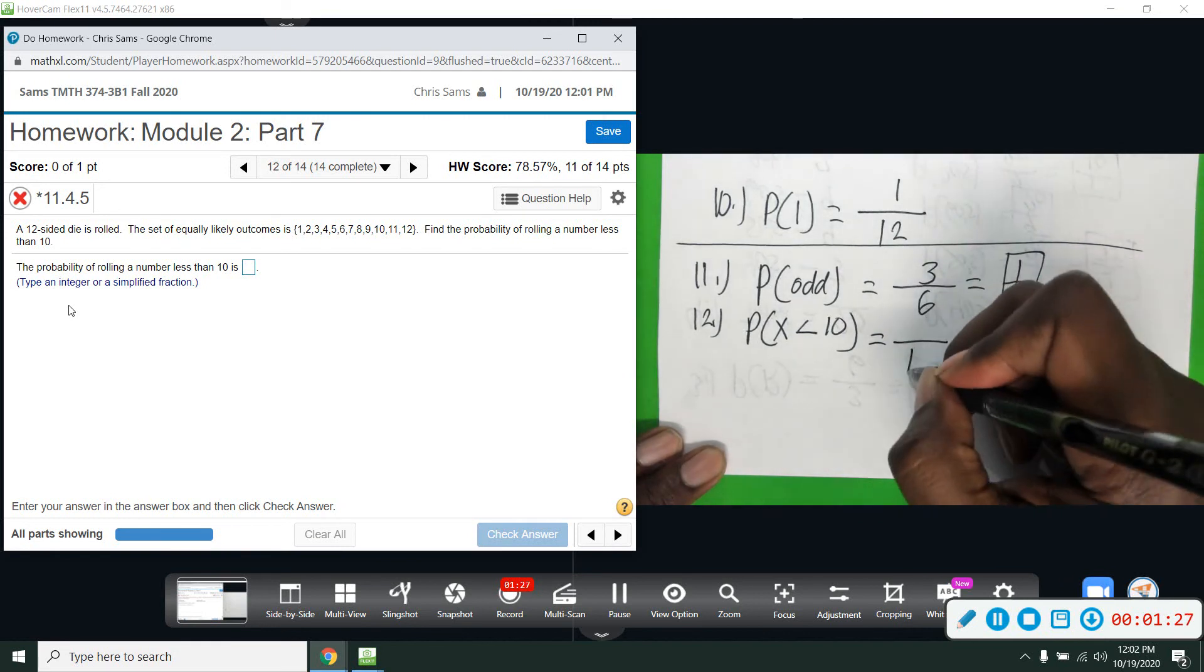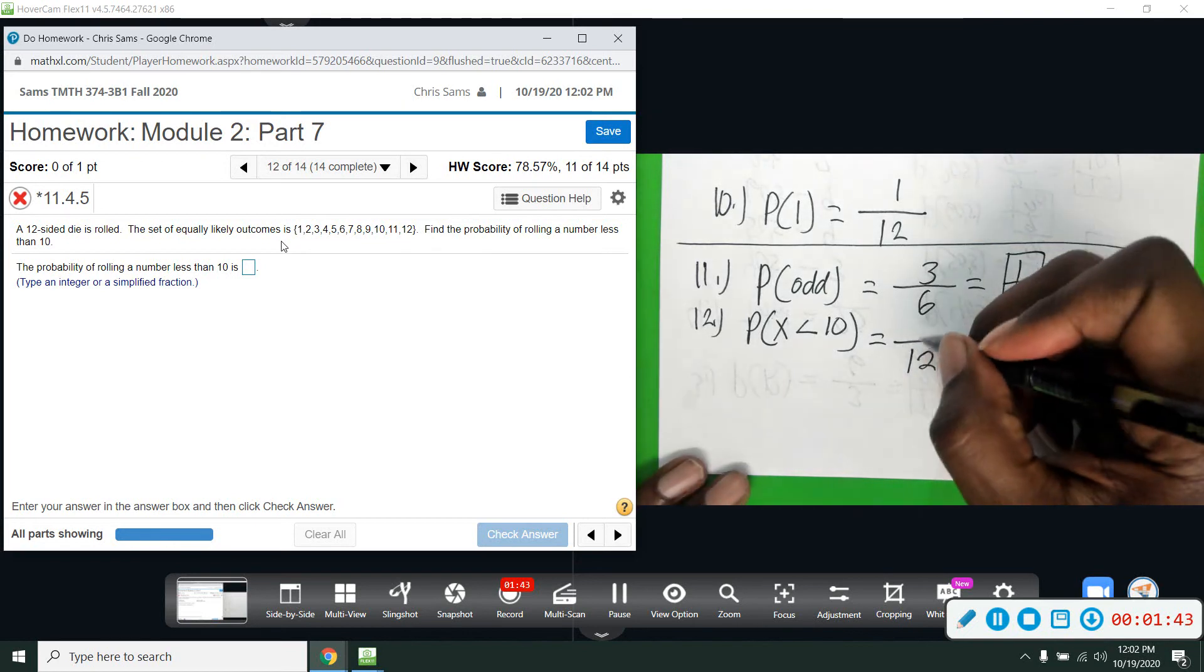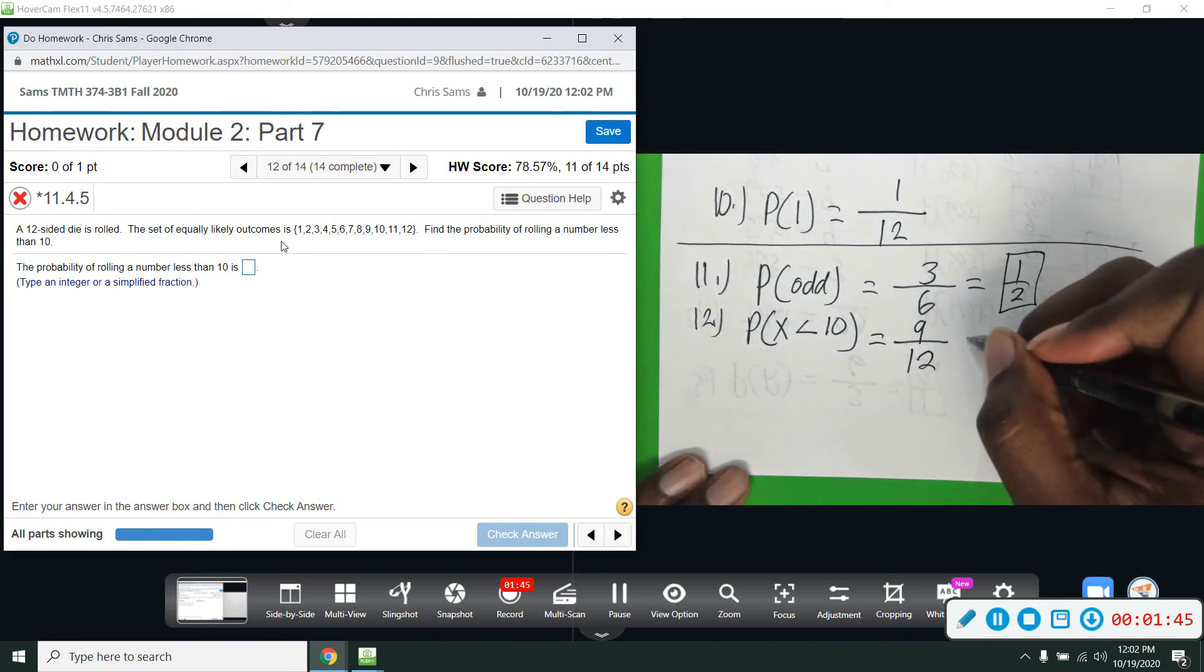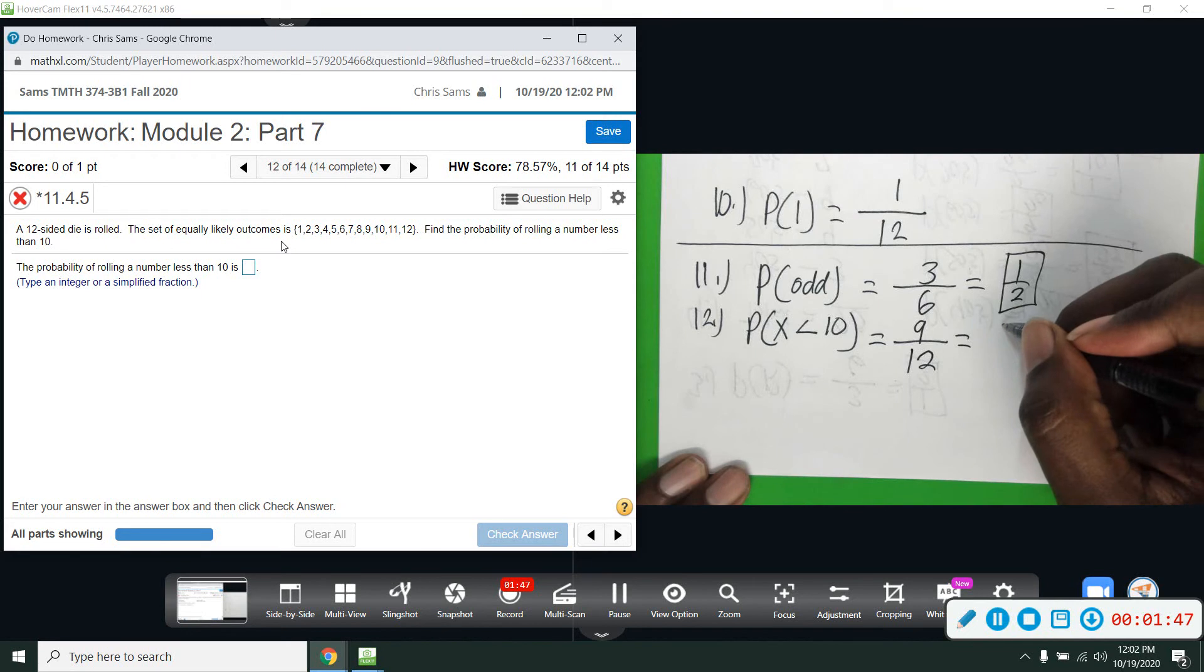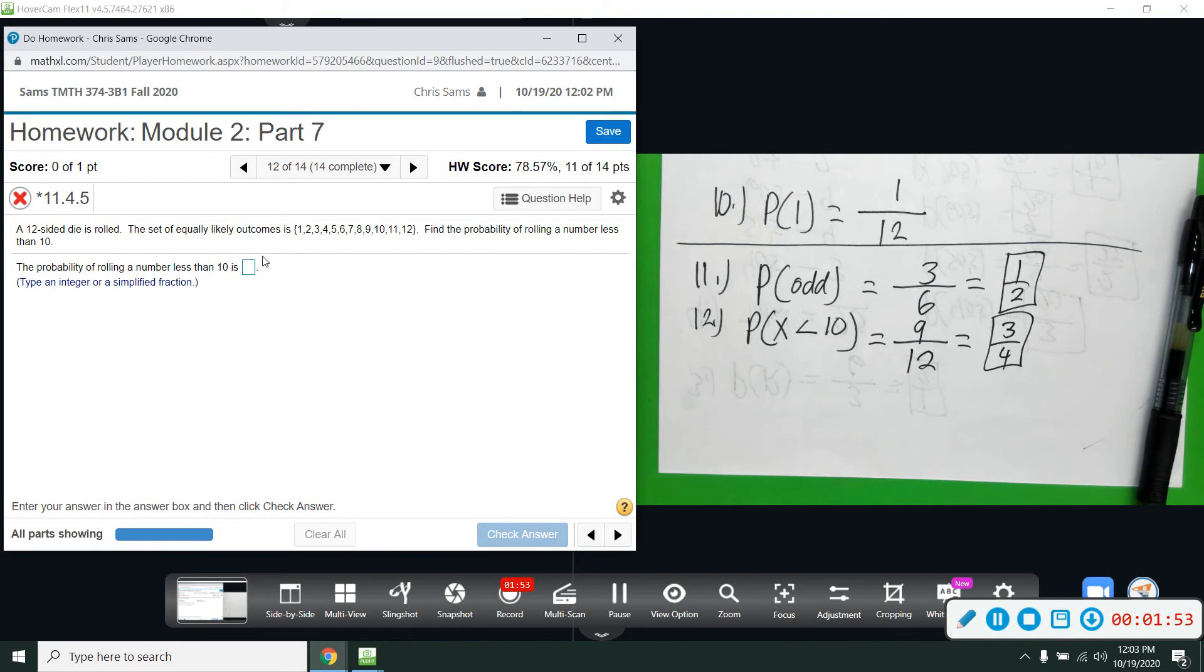All right, so out of 12 numbers, numbers that are less than 10 are going to be 1 through 9. So there's 1, 2, 3—there's 9 of them. 10 is not included. It says less than, strictly less than. So there's 9 numbers that are less than 10, that's 1 through 9. And if we reduce this, divide both by 3, we get 3 over 4. So there's a 3 out of 4 chance we get something that is less than 10.